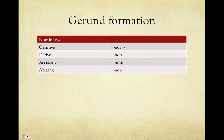The forms are identical to the future passive participles. They're neuter and singular, so the endings are also going to be neuter and singular in the second declension. There's no nominative — that's important to remember. The genitive is going to end in '-ndi', '-ndo' for the dative, '-ndum' for the accusative, and '-ndo' for the ablative.